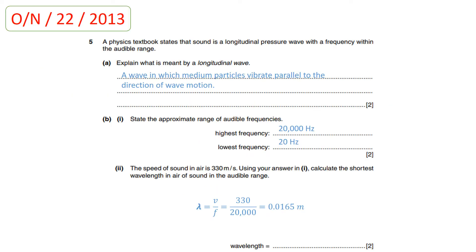This question is taken from year 2013, October-November paper 2.2. A physics textbook states that sound is a longitudinal pressure wave with a frequency within the audible range. A longitudinal wave is a wave in which the medium particles vibrate or oscillate parallel to the direction of wave motion. The medium particles move forward and backward. When the medium particles move forward, the air particles near the sound producing source are pushed and a higher pressure region — compression — is produced. When the source moves backward, the air particles are pushed away and a low pressure region — rarefaction — is produced.